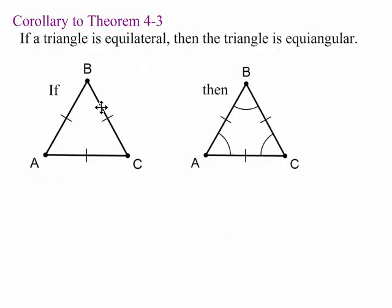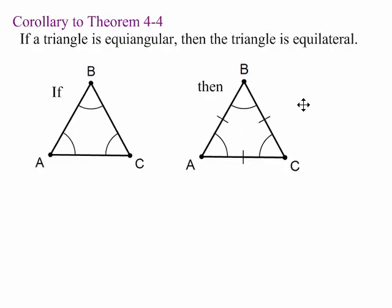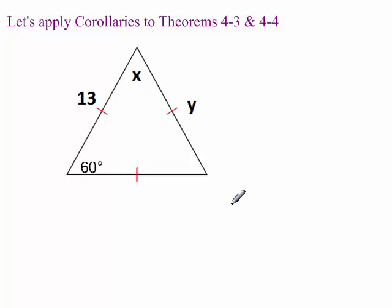Let's keep going. Now, the corollary to theorem 4-3 is if we have an equilateral triangle, then it's an equal angular triangle. And then the corollary to 4-4 is the other way around. If you have an equal angular triangle, then it's an equilateral triangle.